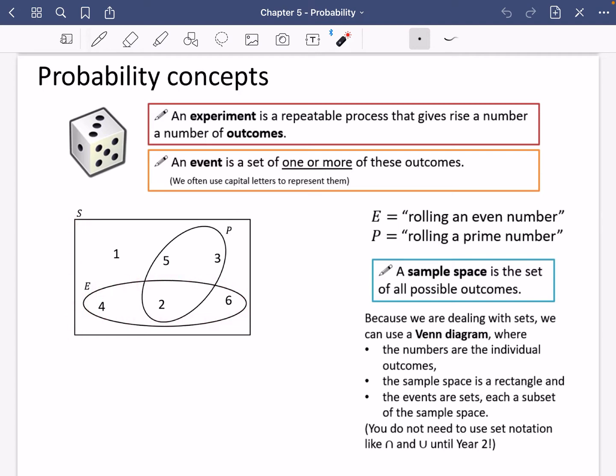I've drawn two of these subsets, which are E and P, to represent these events. Because we are dealing with sets, we can use a Venn diagram where the numbers are the individual outcomes. The sample space is a rectangle, which is why it has this letter S for sample space, and it represents all of the possible outcomes. The events are these sets that we have here, and each of these sets are a subset of the sample space. I've said that you do not need to use set notation, like the AND which is intersection and U which is union, until year two. But I'm going to be mentioning it throughout this topic.